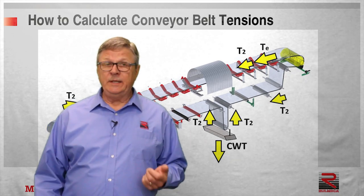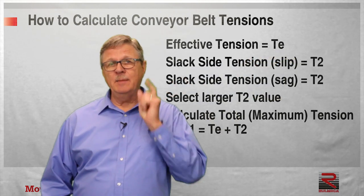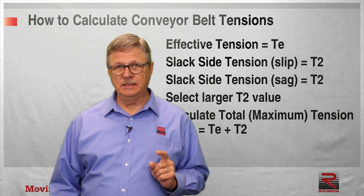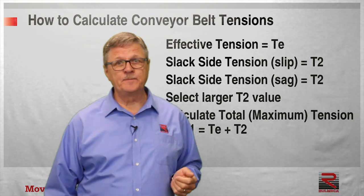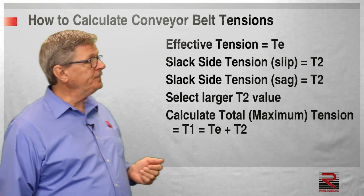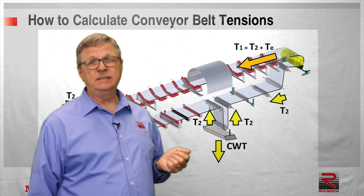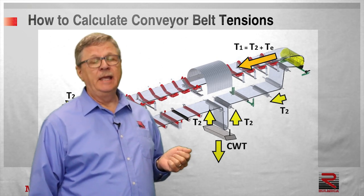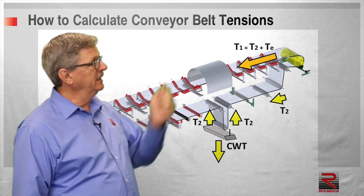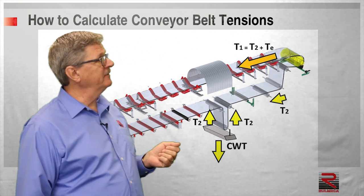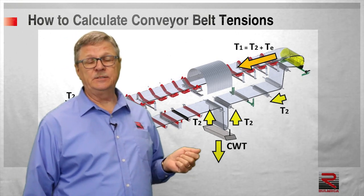Now that we know what T2 is and where it is, we can calculate maximum tension in the belt — necessary to select a belt. T1 is the sum of TE and T2, and in the case of an inclined conveyor, T1 will occur in the immediate vicinity of the drive pulley, as shown in this picture.